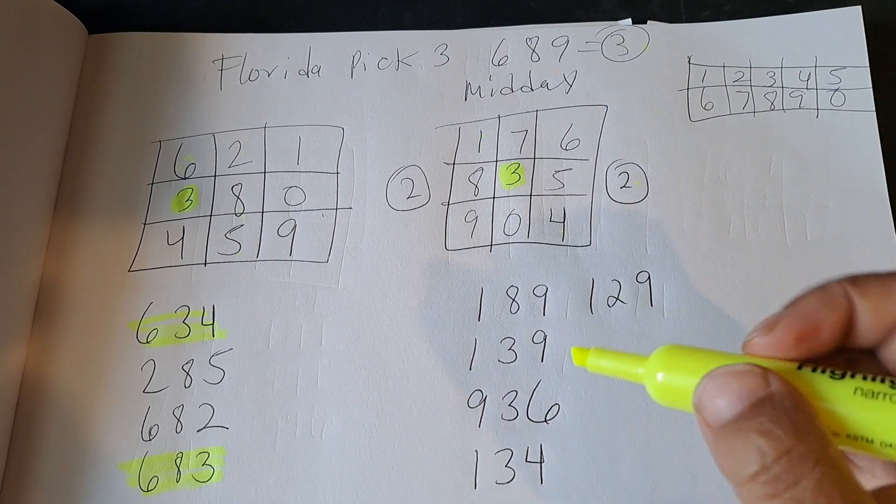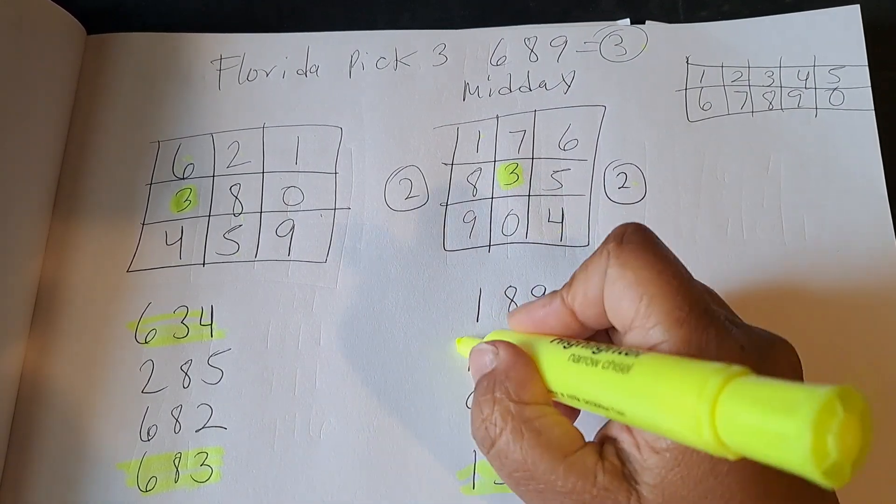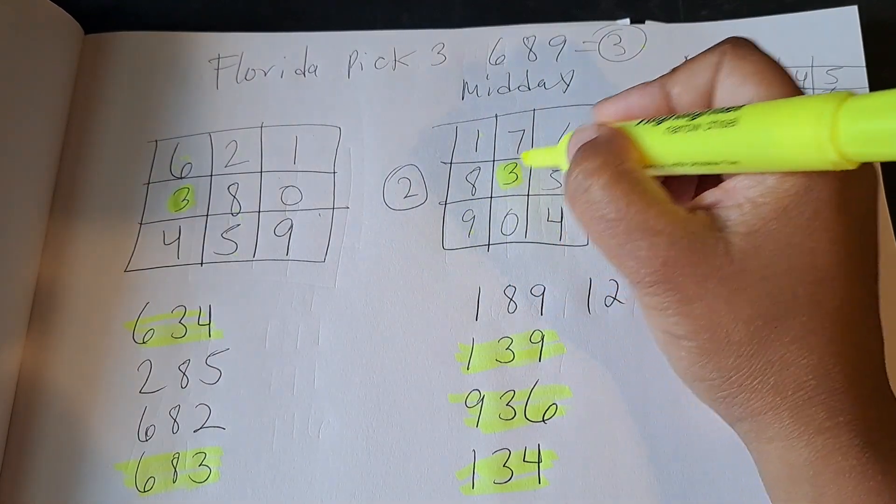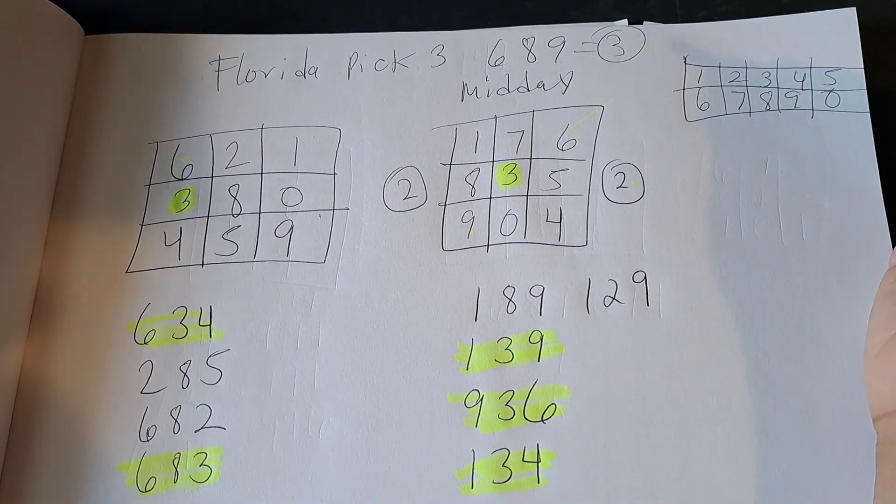Then over here, the mirror number 134. Really liking that one. I like this 139, 936. Right here, 936. I'm really liking that one.